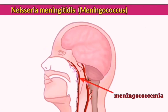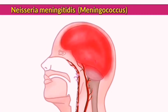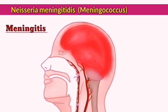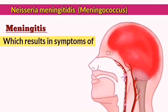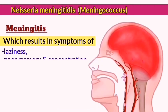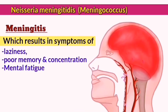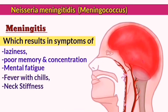Generally, following infection of the blood, meningococci reach the brain and specifically the meninges, which are membranes that protect the brain and spinal cord. Infection of the meninges is the cause of bacterial meningitis, which has symptoms that include poor memory and concentration, fatigue, fever with chills, neck stiffness, nausea and vomiting, and a lack of appetite.